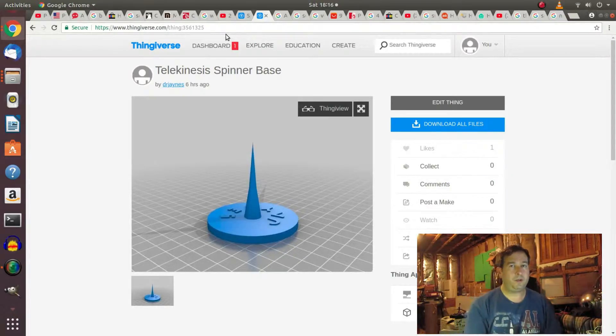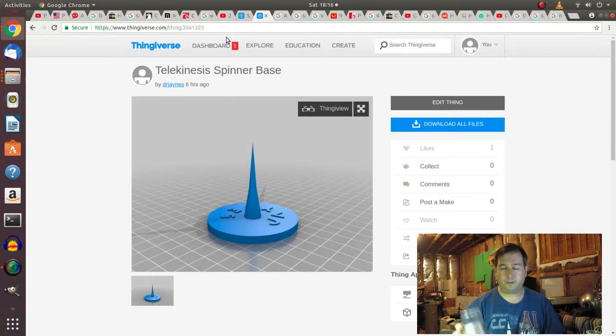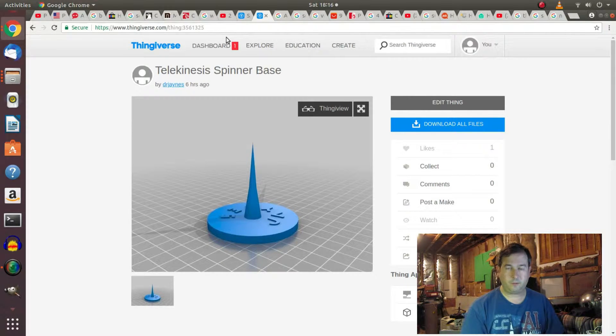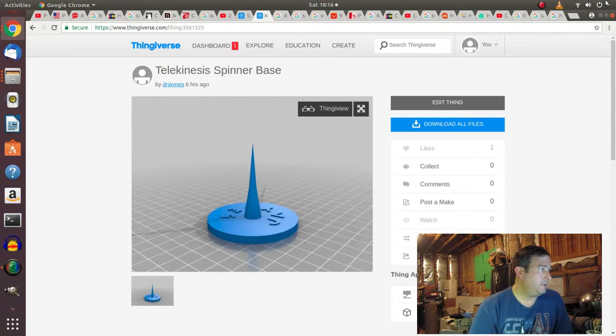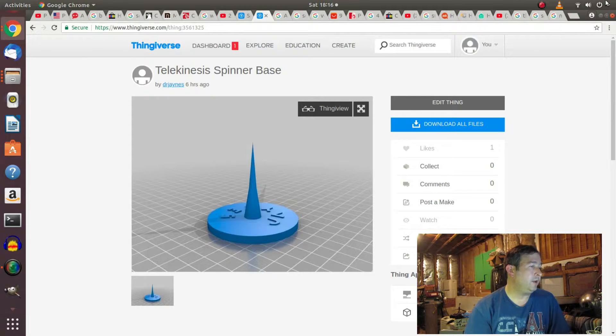Okay, so here I uploaded my spinner thing. This spinner guy here. Put your aluminum foil thing on top of that. I uploaded it to Thingiverse, and it's Thing3561325, and I'll post the link for that in the description.